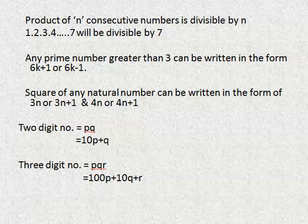A two digit number can be written as pq, that is 10p plus q. A three digit number pqr can be written as 100p plus 10q plus r.